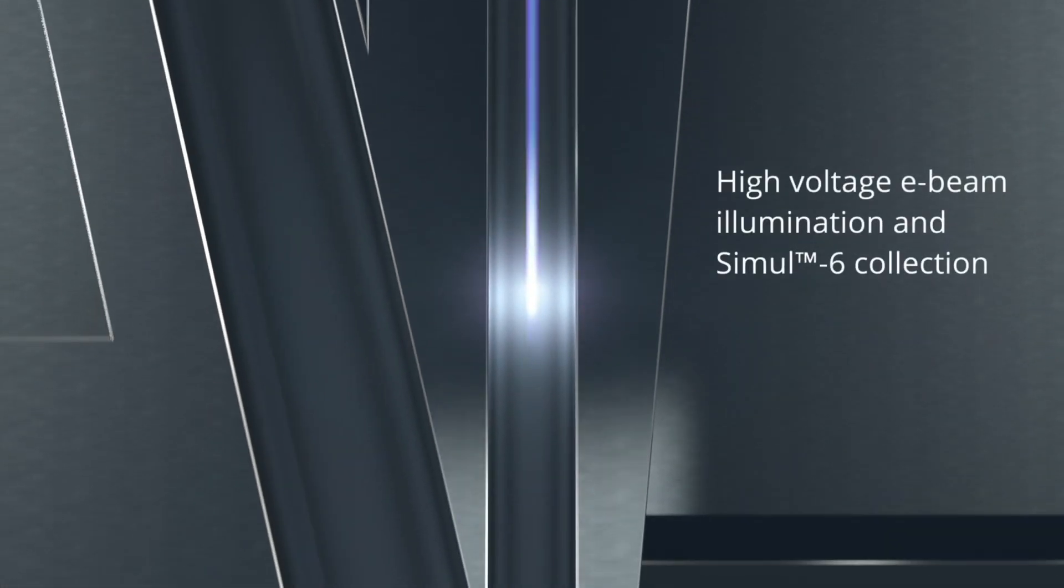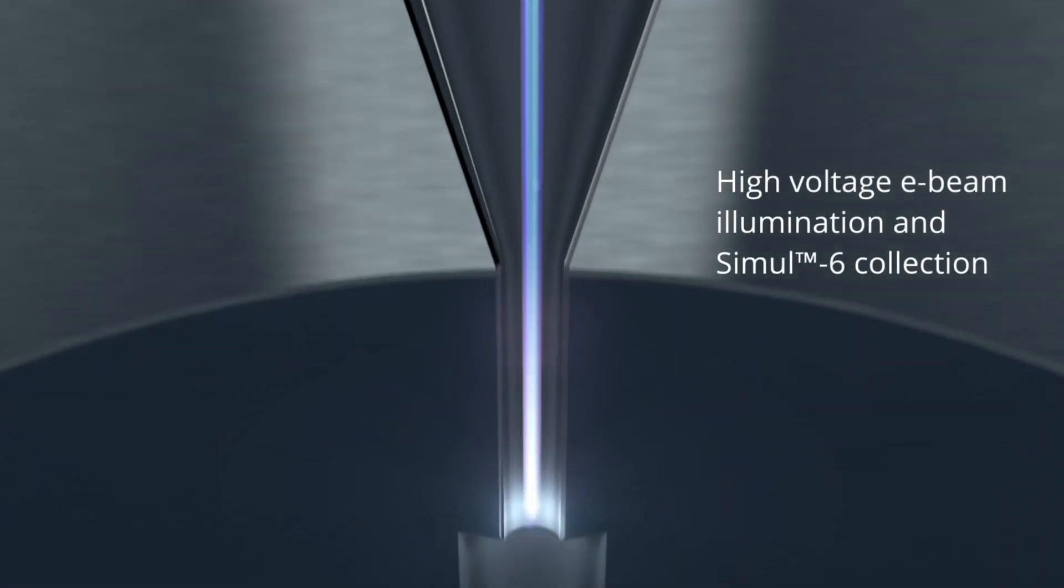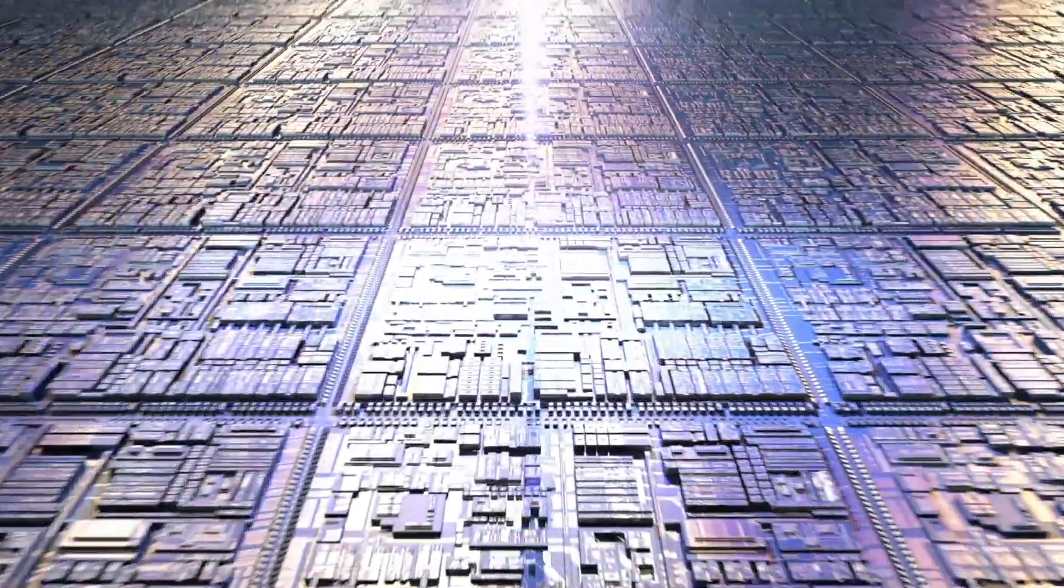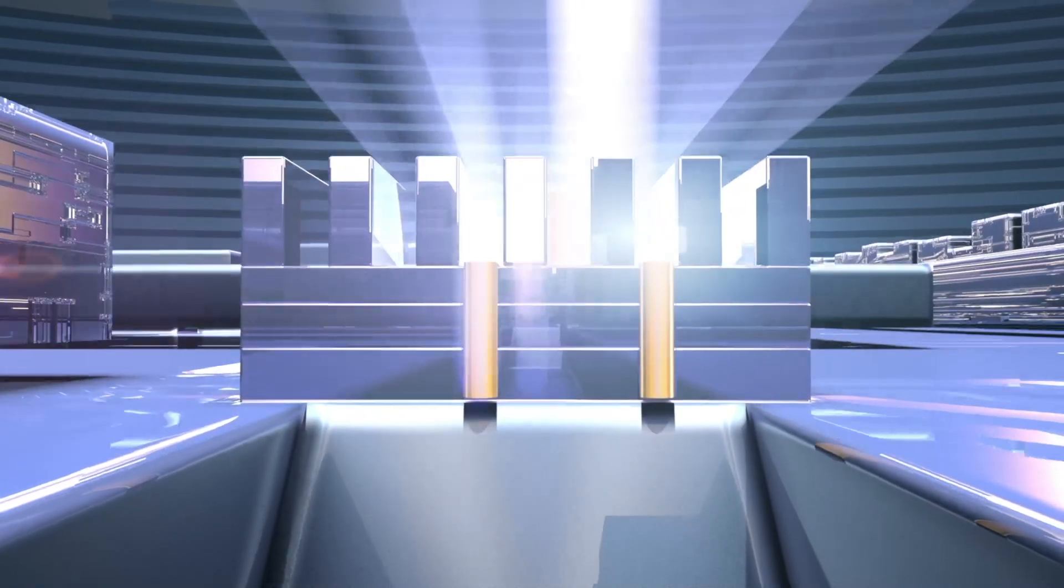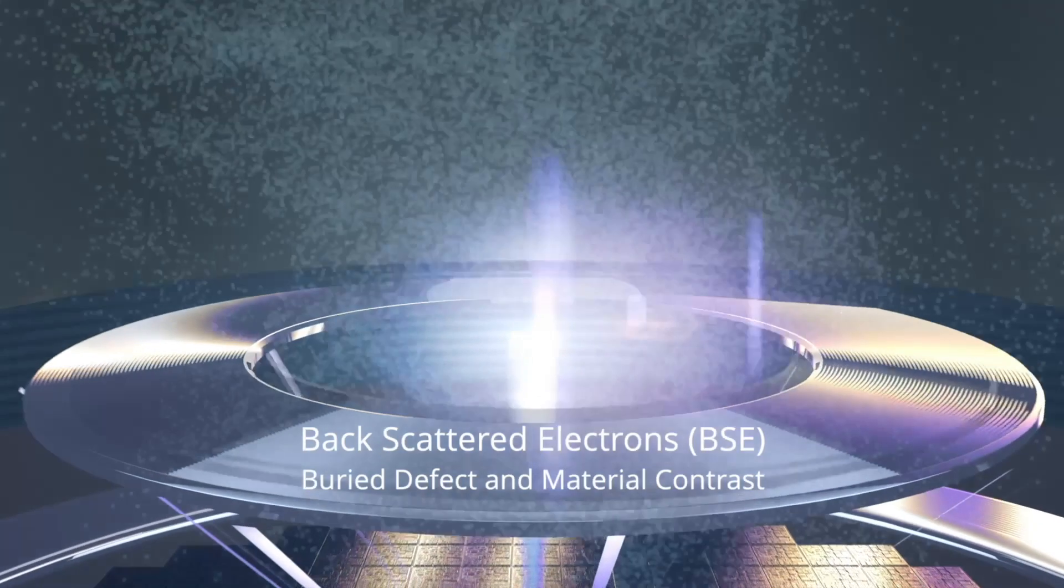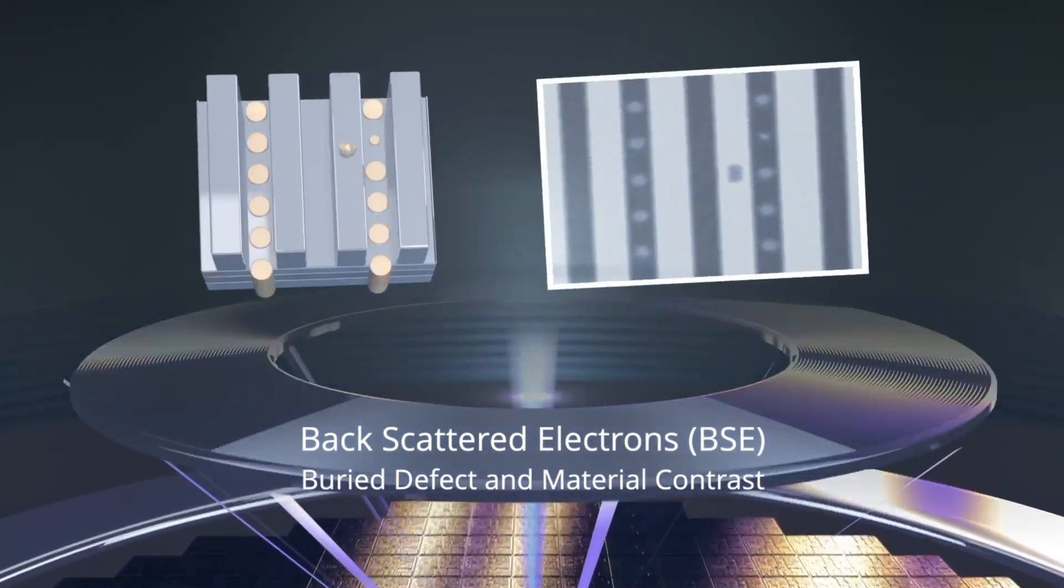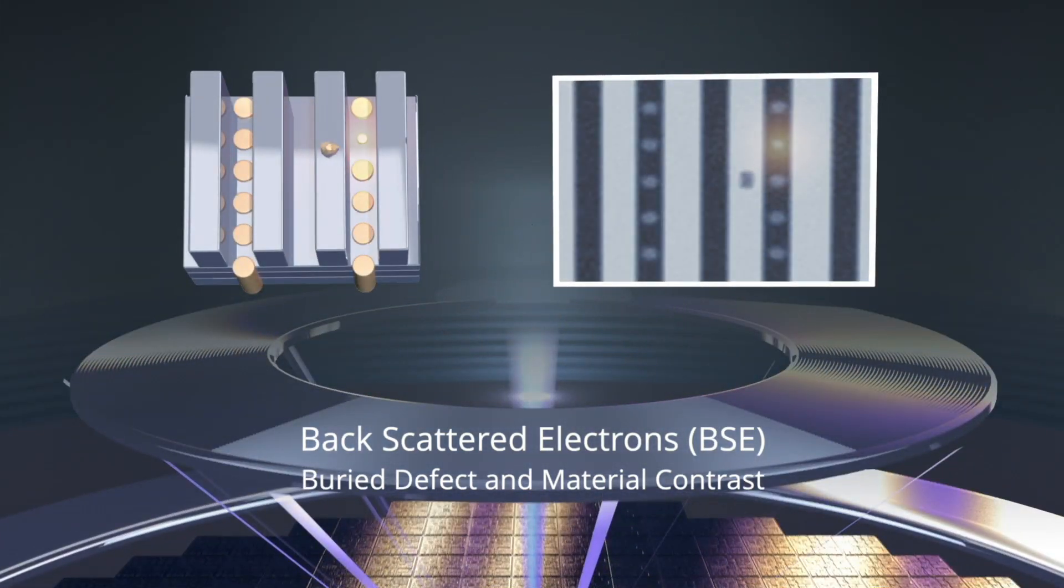The ESL-10's electron optics have a wide operating range. With the maximum landing energy of 30 kilovolts, electrons reach the bottom of deep structures. The high-energy backscattered electrons are then collected by the unique in-lens detector, enabling signals to defects at the bottom of deep structures.